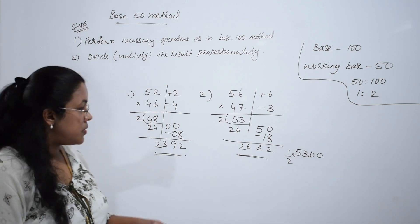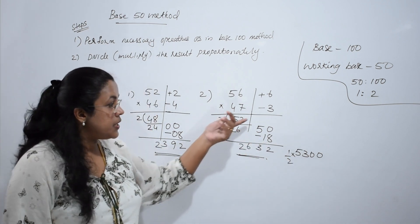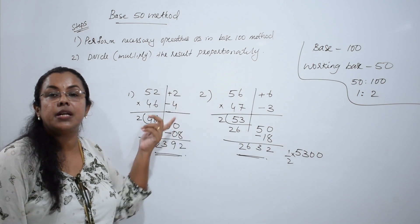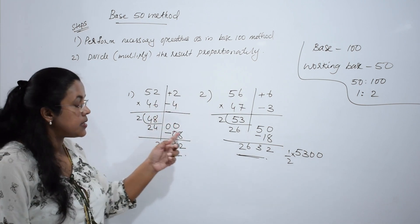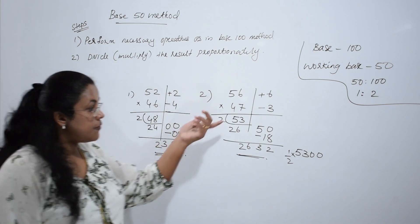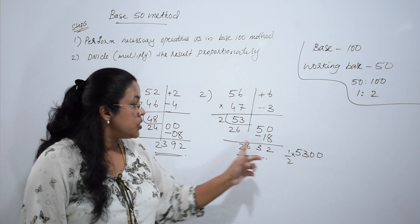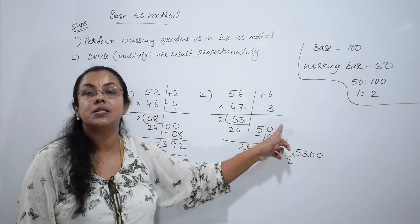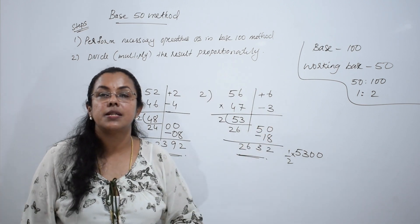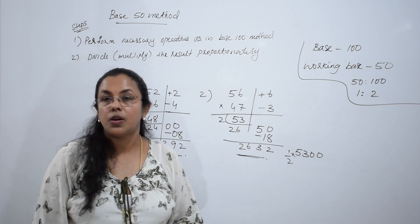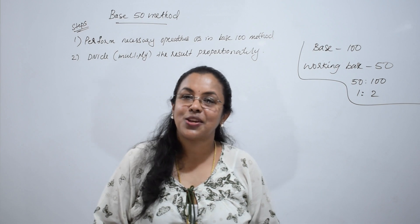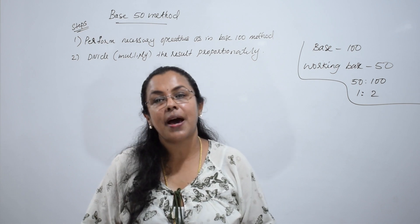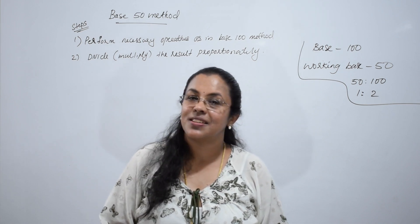Don't get confused. 53 means 5300, and 48 means 4800. Half of 4800 is 2400 — so we subtract 8 from 2400. Half of 5300 is 2650 — 26 and a half means 2650. Minus 18 gives the answer 2632. Hope it is clear to you now. Thank you for watching my video — keep practicing. I will be back with more videos on Vedic Maths. Thank you.